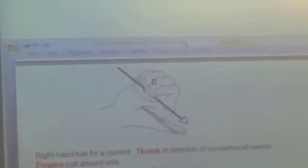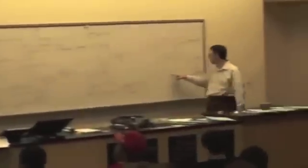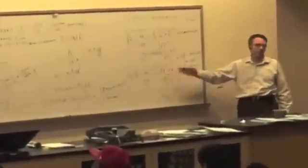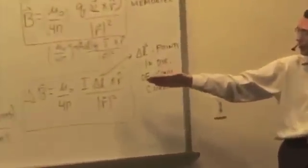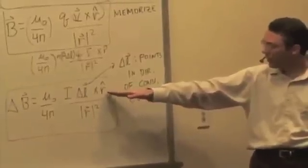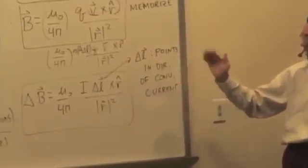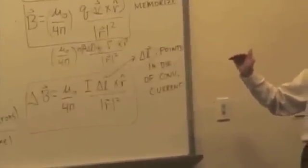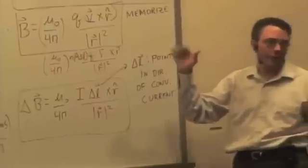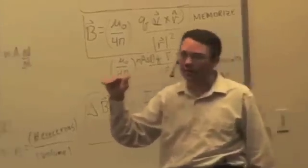Two ways of getting the direction of the magnetic field. We can either do the cross-product right-hand rule, which says point your fingers in the direction of delta L, basically the direction of conventional current. Curl the fingers like any cross-product towards the second vector, which is the R-hat direction. And your thumb gives you the direction of the magnetic field.